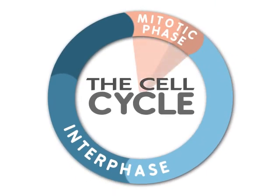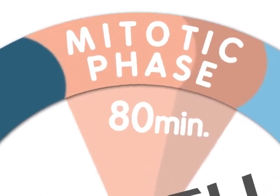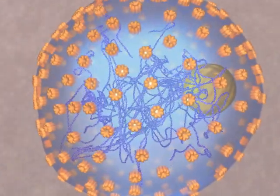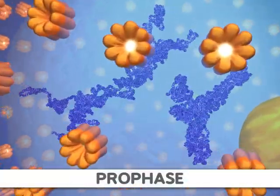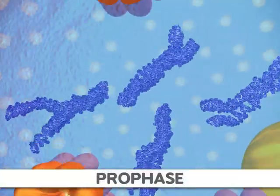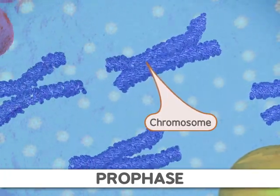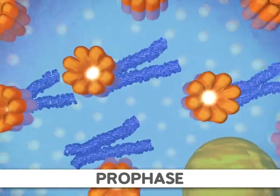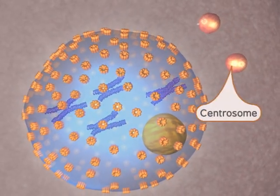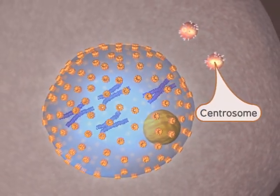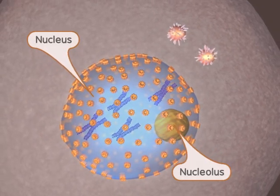For a typical eukaryotic cell, mitosis will last about 80 minutes. During the first stage of mitosis, called prophase, we first see the classic chromosome structure. This occurs through a condensation process. At the same time, protein strands called microtubules appear from the centrosomes in animals. Finally, a structure found within the nucleus, the nucleolus, disappears.